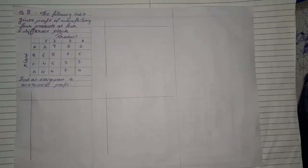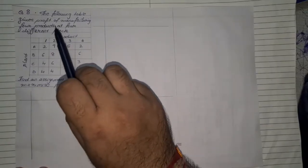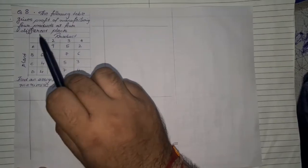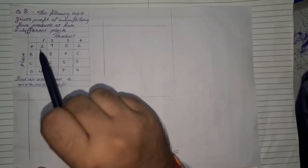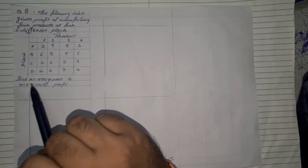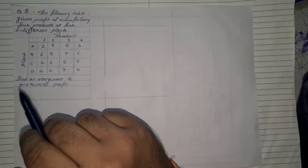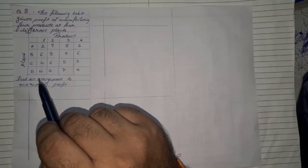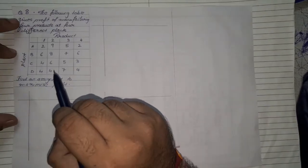Okay now let us see this is question number eight. Let us see what this question asks us to find. The following table gives profit of manufacturing four products at four different plants. Again they give you the products and the plants and they ask you to find the assignment to maximize the profit. Again this is a sum which is based on maximization. So now let us see how to start.